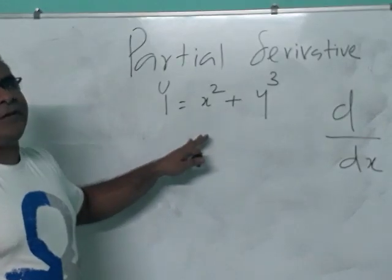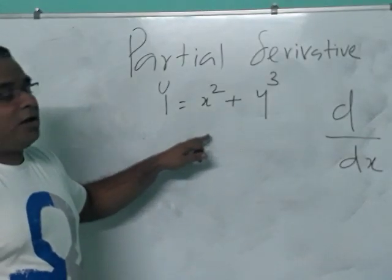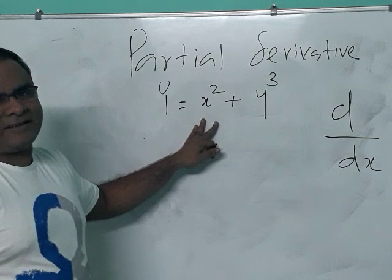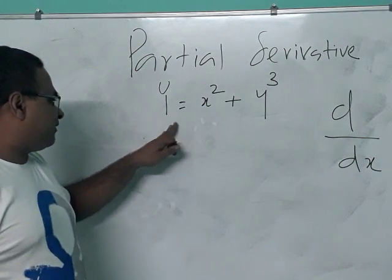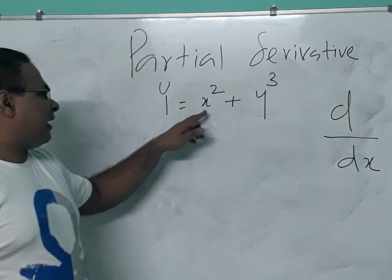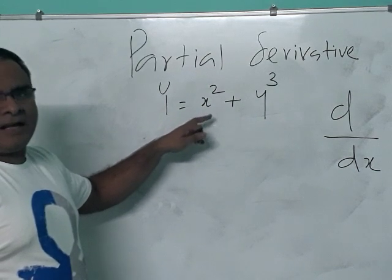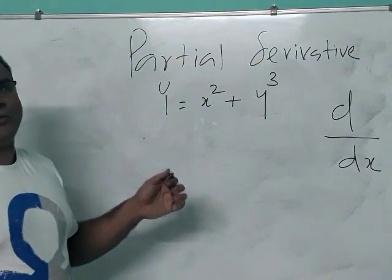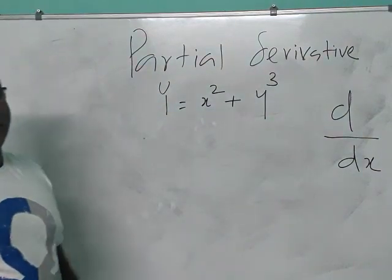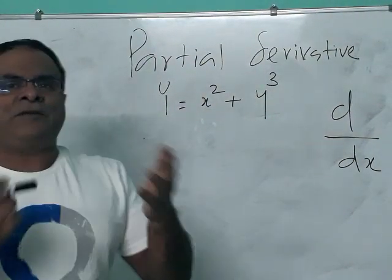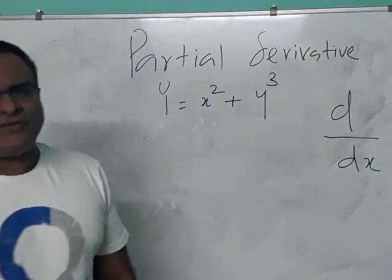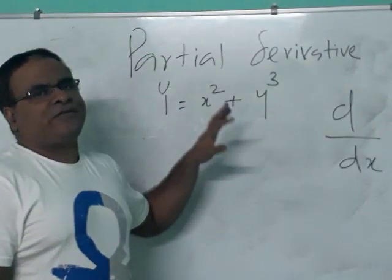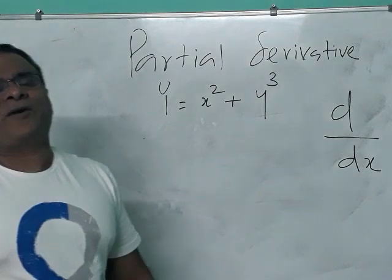The important point is: when you differentiate this equation with respect to y, then x will be a constant. When you differentiate this equation with respect to x, the other variable y will be a constant. That is the concept of partial derivatives.